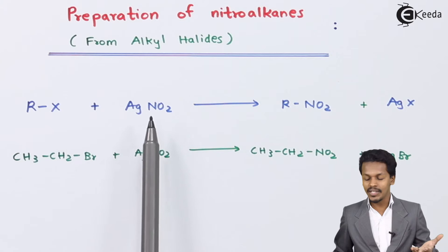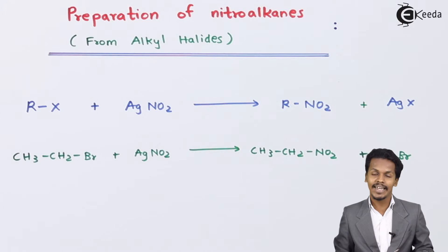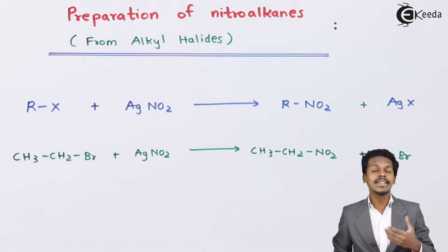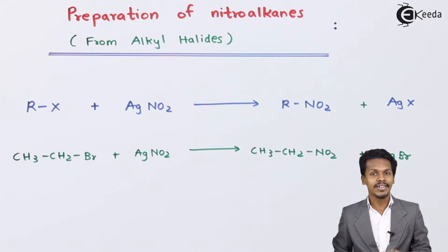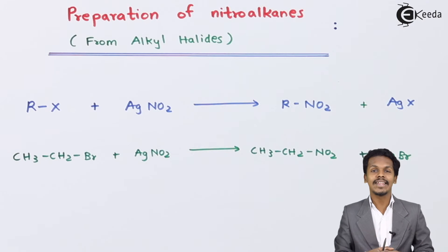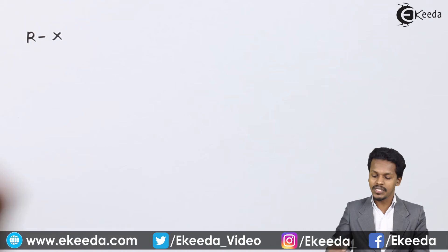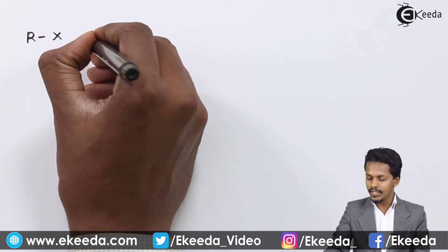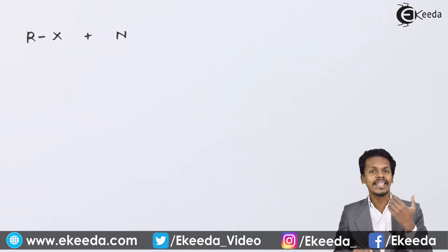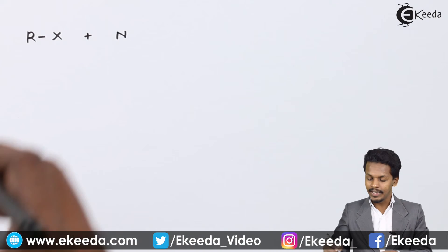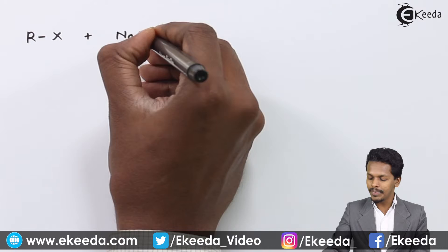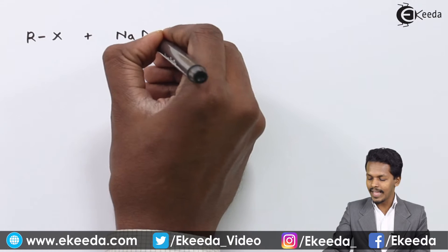This was the reaction of an alkyl halide with AgNO2 (silver nitrite). Now let us understand the other reaction where the alkyl halide is treated with sodium nitrite (NaNO2). Consider an alkyl halide RX reacted with NaNO2.